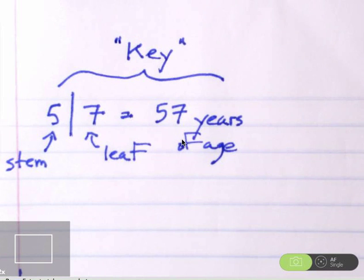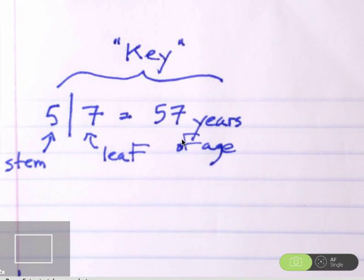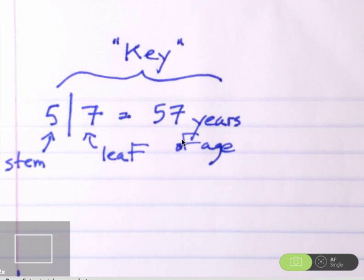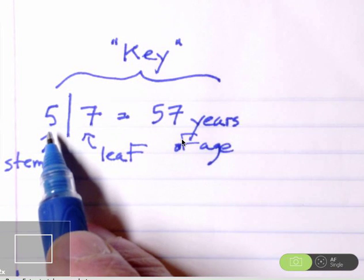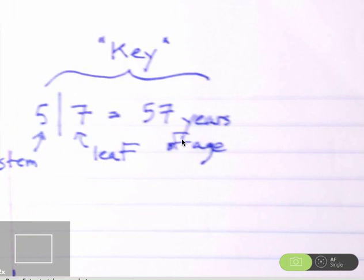So if I look at the ages of inauguration, the youngest age at inauguration, I believe, was Teddy Roosevelt at 42. The oldest age at inauguration was Reagan at 69 years of age. So our graph needs to accommodate stems of 4, 5, and 6.